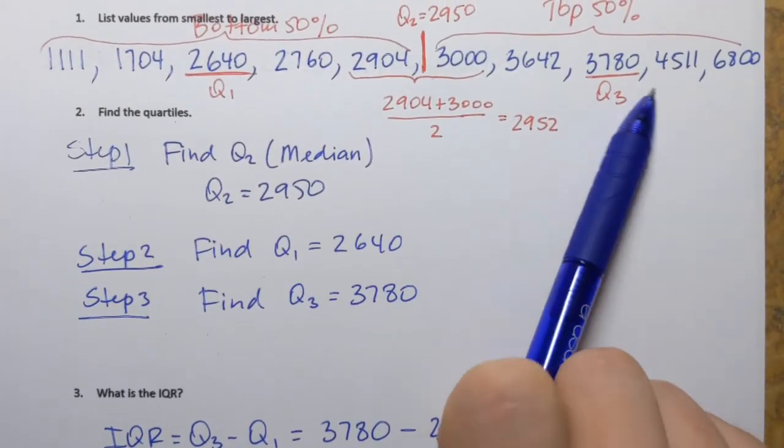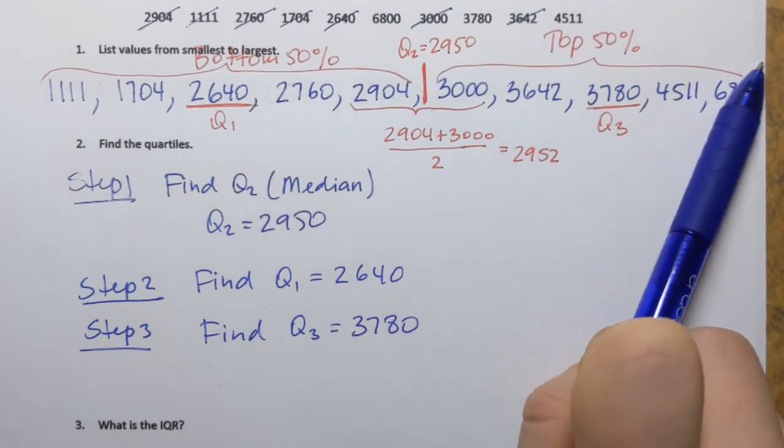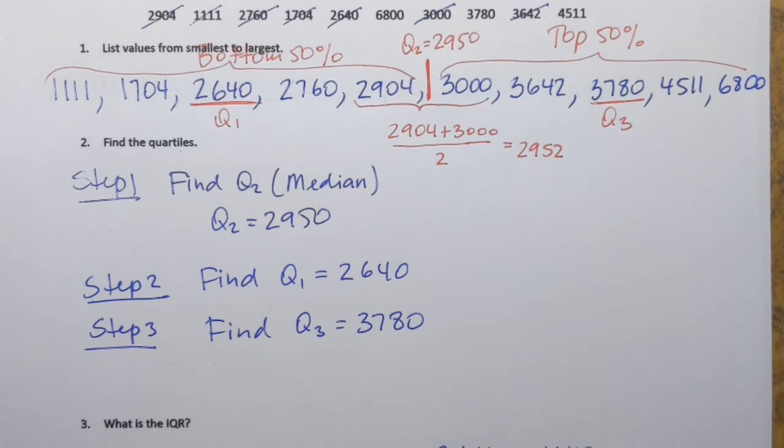Oh, I do right here. 6,800, right? See how it's larger than that right fence? Well, that means that that's going to be an outlier.